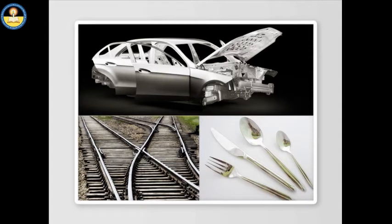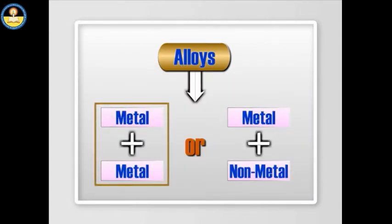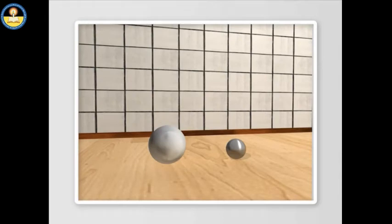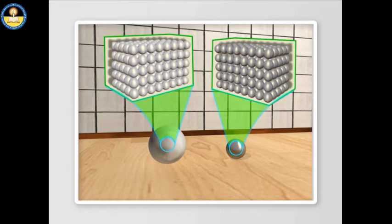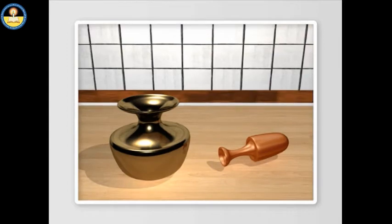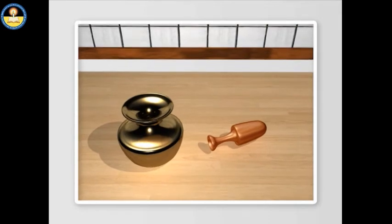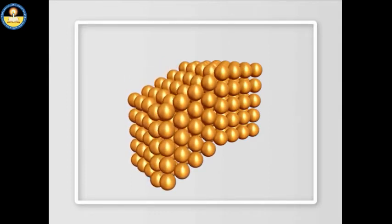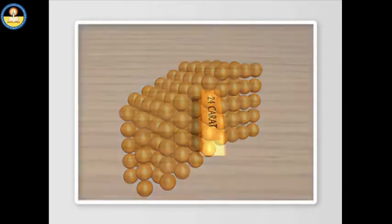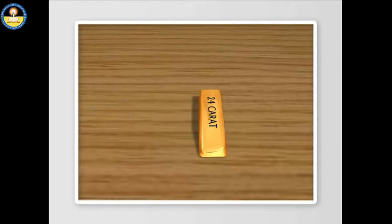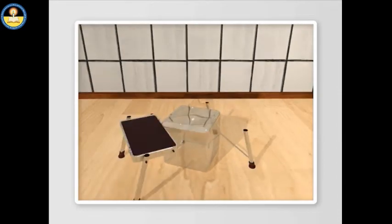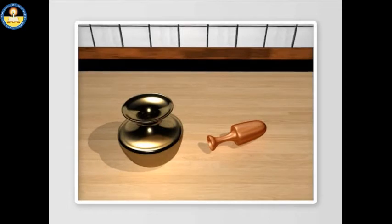Metals can also have solid solutions, known as alloys. Alloys can be formed by combinations of either metals with metals or metals with non-metals. Pure metals are made up of the same type of atoms, and their orderly arrangement enables layers of atoms to slide on one another when force is applied, making metals ductile. Most pure metals are weak and soft. The aim of making alloys is to improve their properties by making them stronger, harder, resistant to corrosion, and giving them a better finish and lustre.